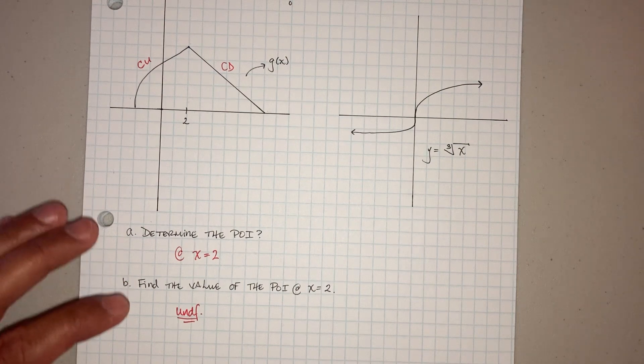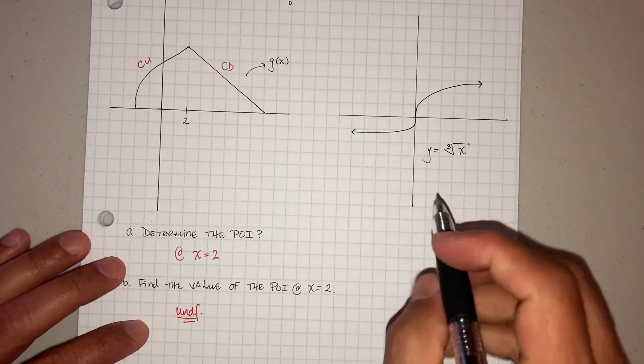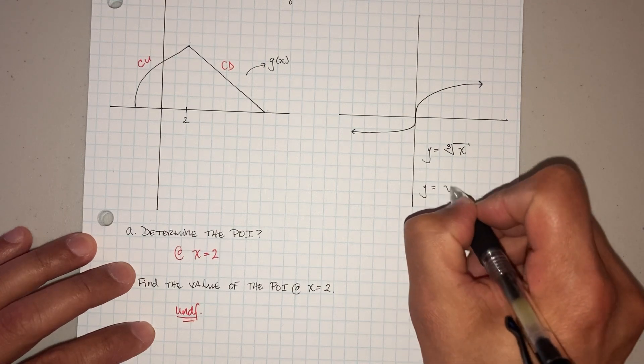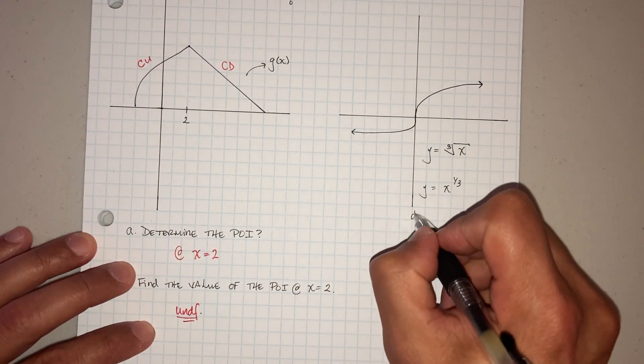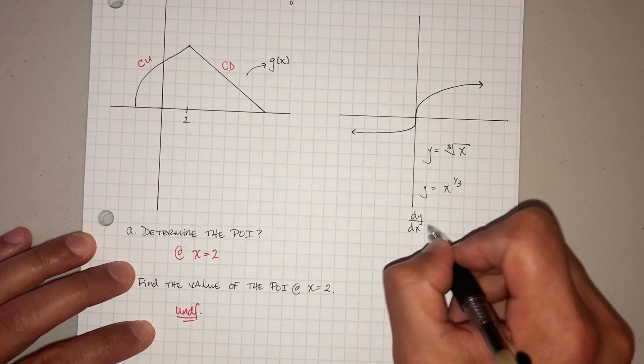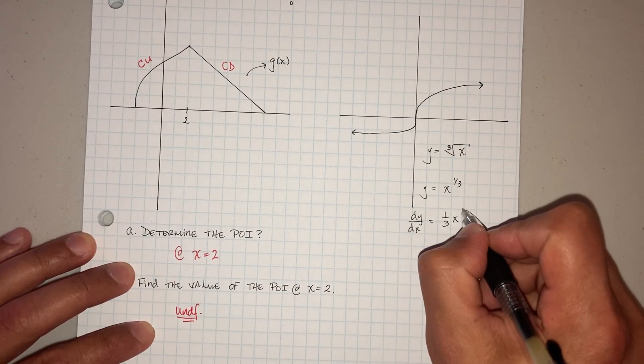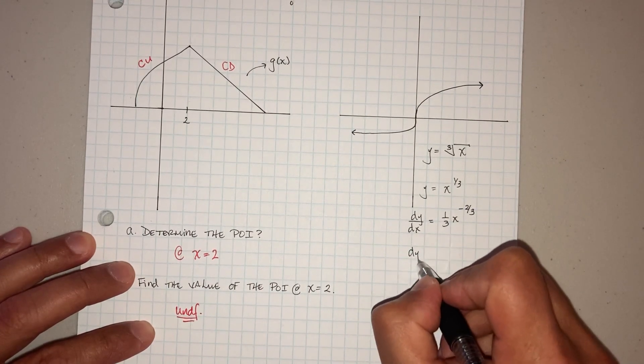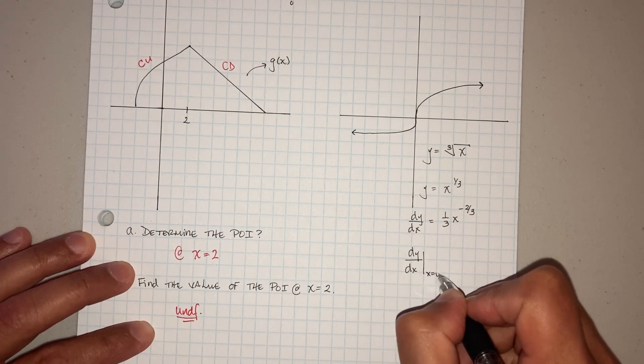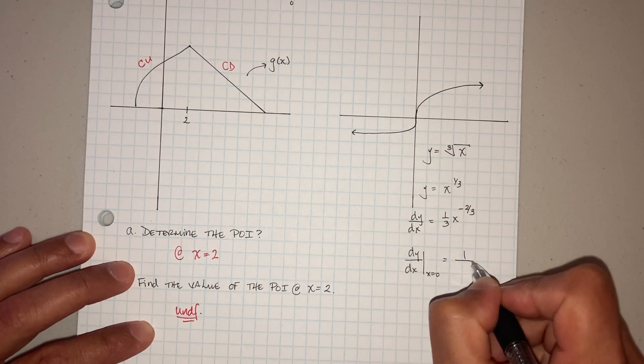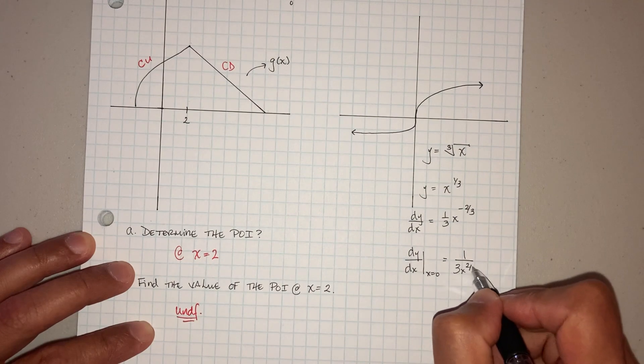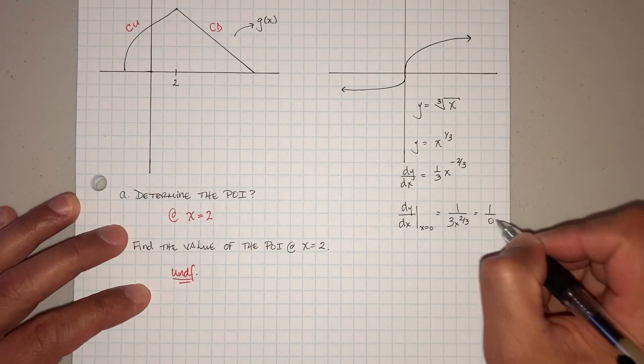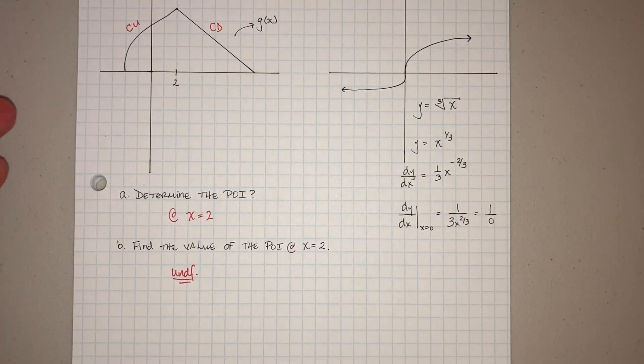And then we can actually do it mathematically as well. Let's say I want to take the derivative. So we have, let's see, y equals, change it, x to the 1 third. dy dx, take the derivative, becomes 1 third x, take away 1, becomes negative 2 thirds. And now we go ahead and plug in x equals 0. What happens? That negative exponent goes to the denominator. And when we plug in 0, what happens? You're going to get 1 over 0, which is undefined. You can't do that.